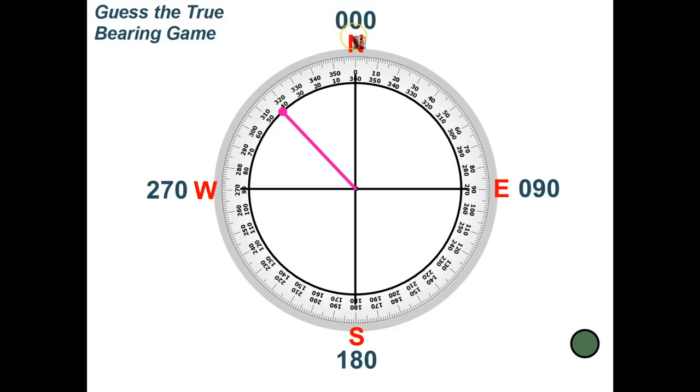True bearings, once again. North is 0. You go in a clockwise direction, up to 359 degrees. And you name the bearing by using three digits. For example, 317.